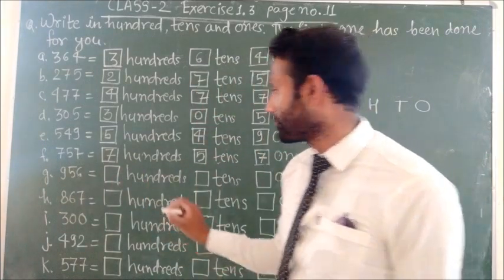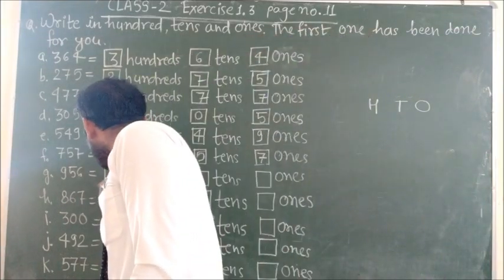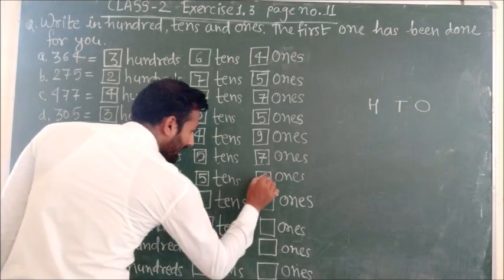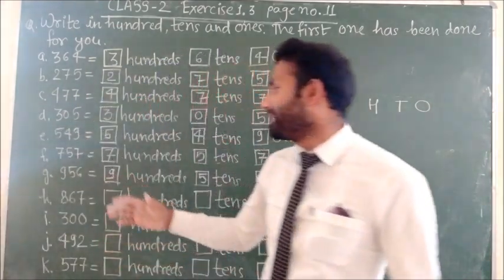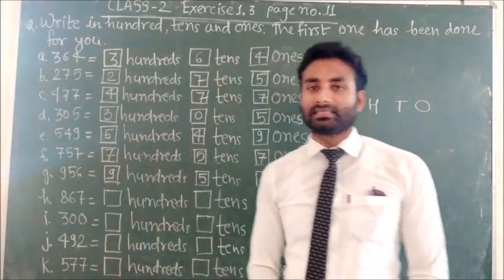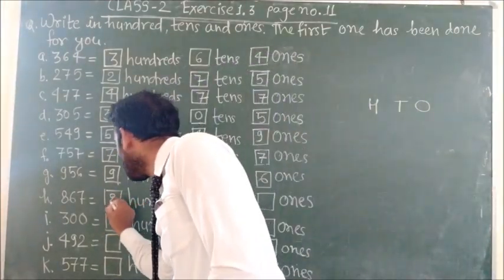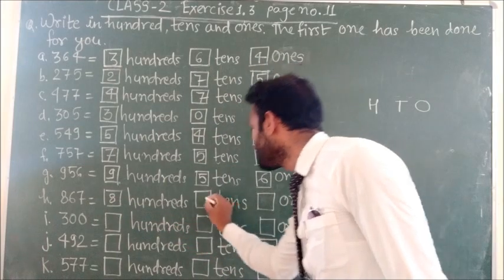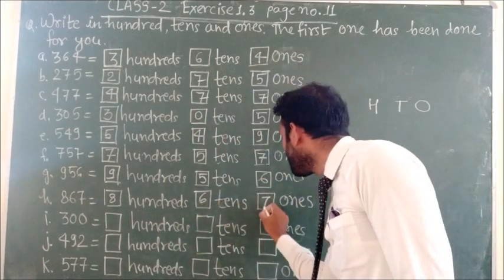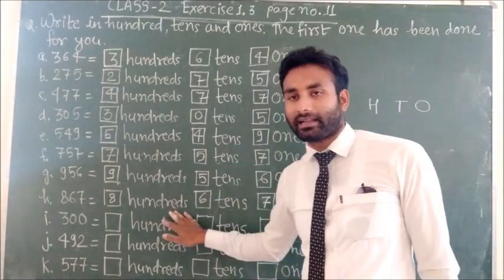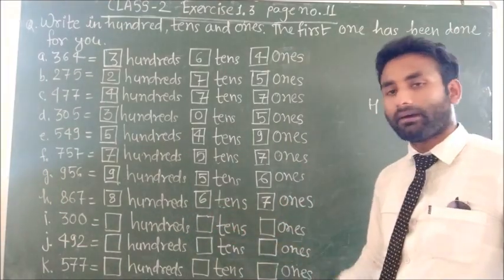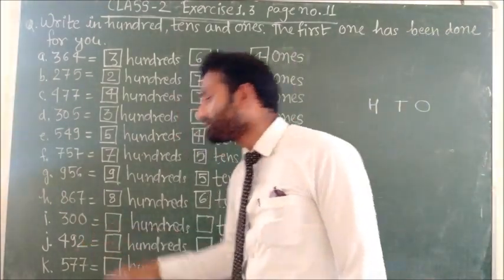Next is 956, so 9 hundreds, 5 tens, and 6 ones. Next is 867, so 8 hundreds, 6 tens, and 7 ones.